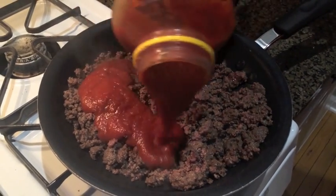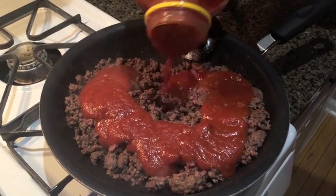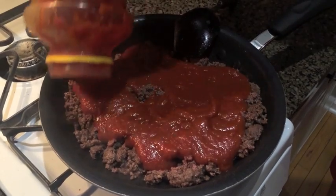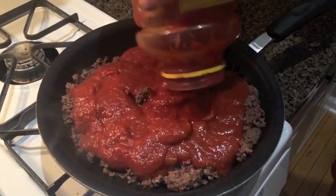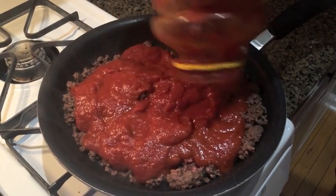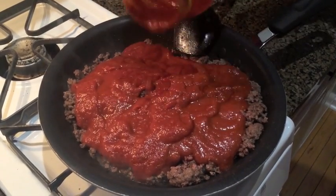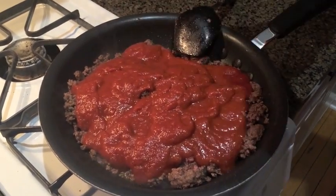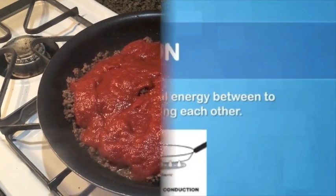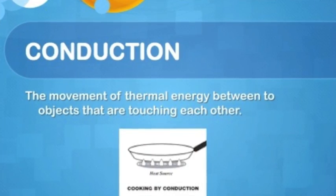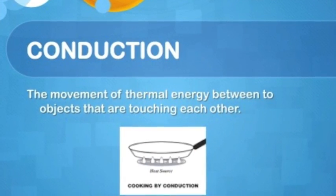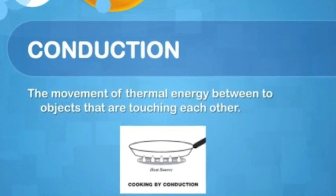All of this seems so simple, but how does it actually work? The heat from the metal pan is transferred to the meat by conduction, just like the heat from the pan is transferred to your hand. Conduction is the movement of thermal energy between two objects that are touching each other.